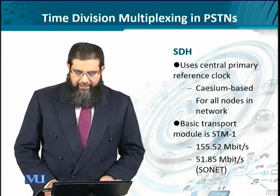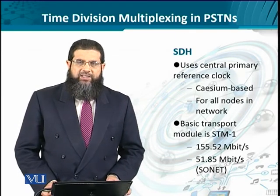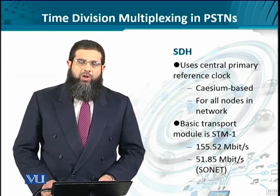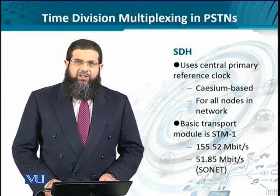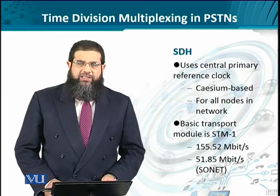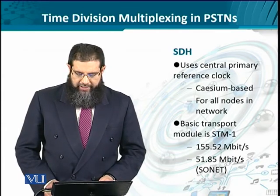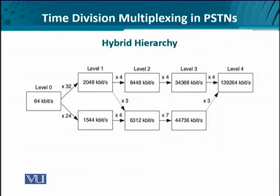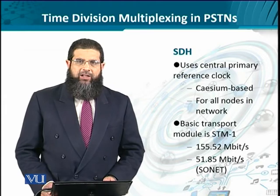The synchronous digital hierarchy uses a central primary reference clock based on a radioactive material called cesium. This cesium-based clock is extremely precise, and all timing information is fed to all the multiplexers in the hierarchical system. In SDH, the basic building block is known as synchronous transport module number one, STM-1, with a data rate of 155.52 megabits per second. Moving from 139.264 megabits per second to 155.52 megabits per second in STM-1 is achieved through bit stuffing and padding.